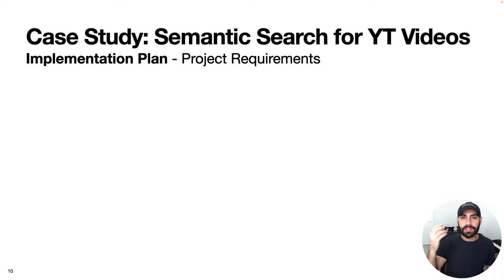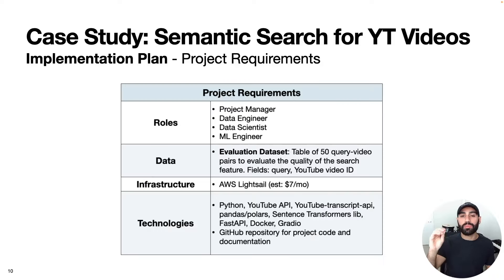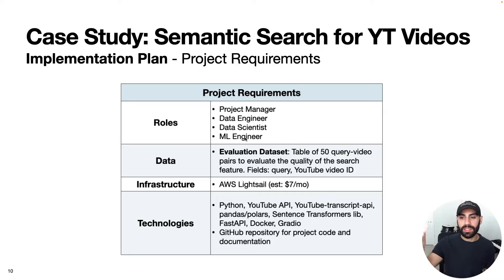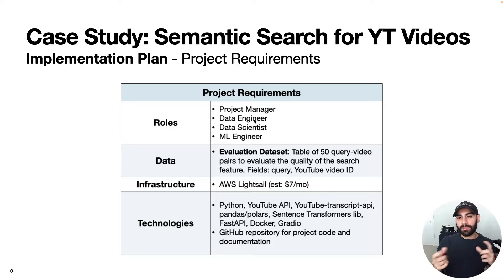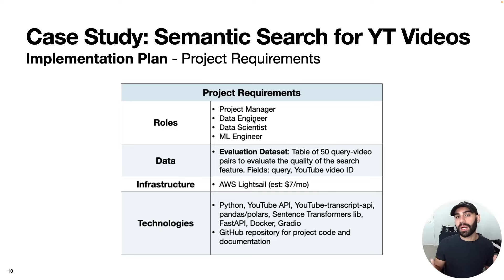That brings us to the implementation plan, the first part of which are the project requirements: the roles, the data, the compute infrastructure, and the technologies needed. The roles listed are the four hats of the full-stack data scientist: project manager, data engineer, data scientist, and ML engineer. Importantly, roles do not equal people — multiple people can do multiple roles, and a single role can be done by multiple people. Even as a full-stack data scientist, you might still want to bring in a data engineer or data scientist to help.